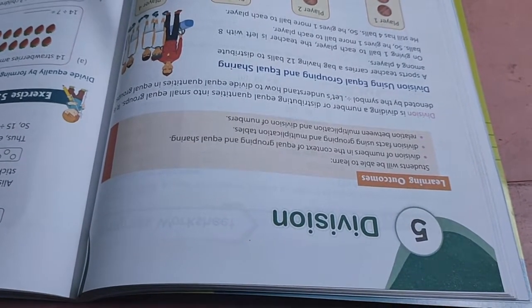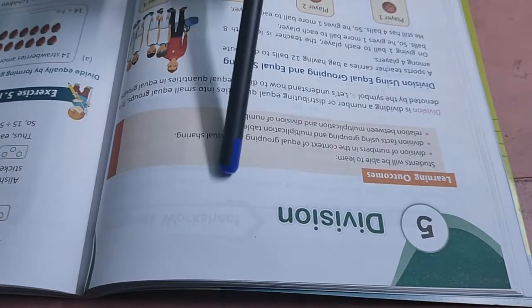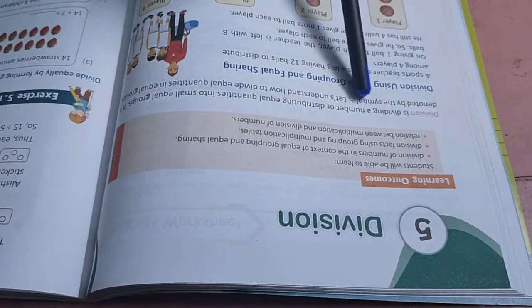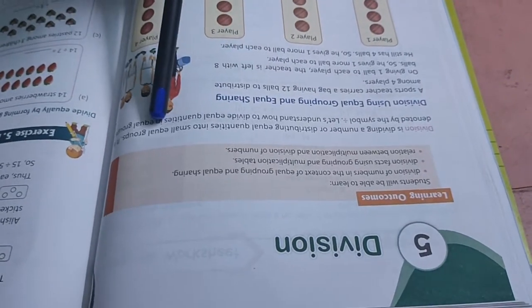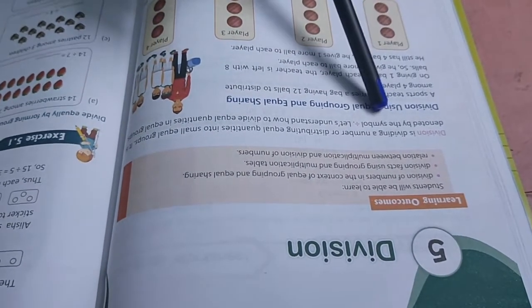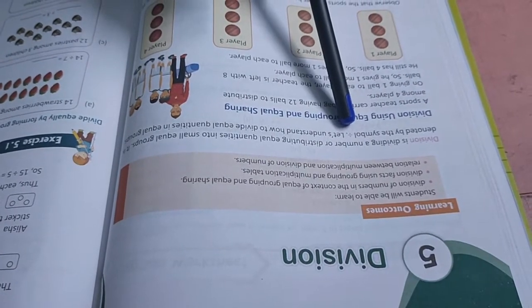Good morning class 2 children. Now let us start second term syllabus, chapter 5, Division. Division is dividing a number or distributing equal quantities into small equal groups. It is denoted by the symbol divided by.